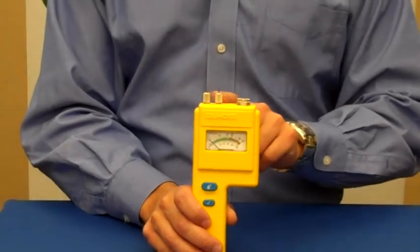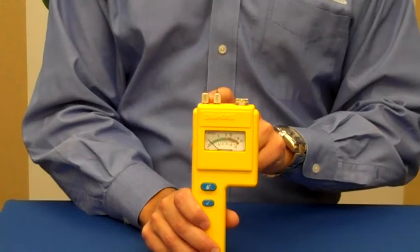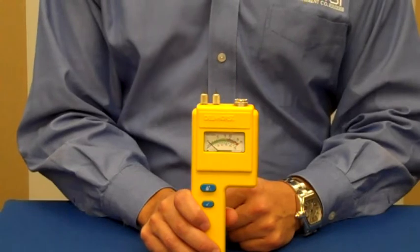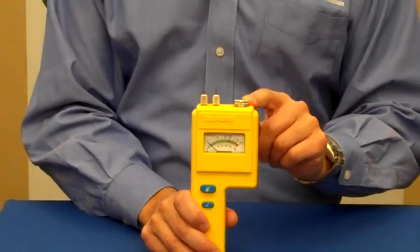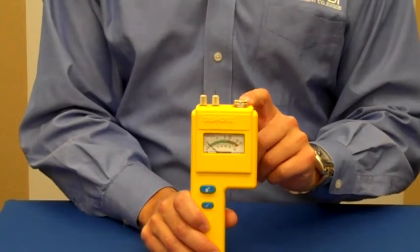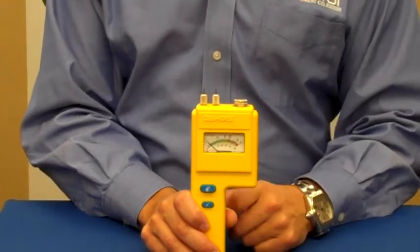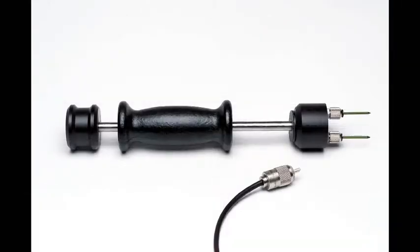The built-in pins on the top of the unit can be used for drywall, for wood up to an inch thick, and also can be used in conjunction with masonry nails to check concrete. The connector on the side will accept any Delenhorst electrode, and the two most popular electrodes used with the BD10 are the 21E, which is used for checking insulation behind drywall, and the 26ES hammer probe for checking hardwood floors and subfloors.